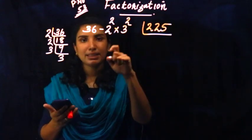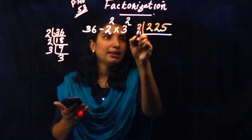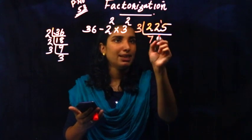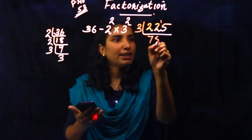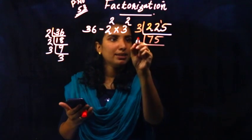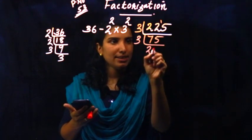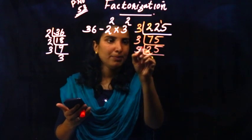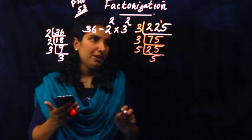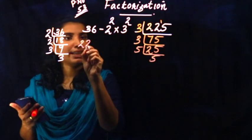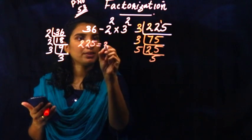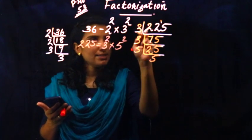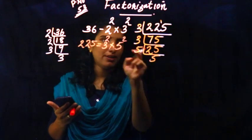We have to do 3. We have to do 7, 3, 21. Then again, this is 21. Then we have to do 15, then 5, 3, 15. Now we have to do 3. 2, 6. Then again we have to do 5, 5, 5, 25. Now we have to do 225. 225 is equal to 3 squared into 5 squared.